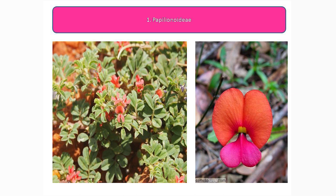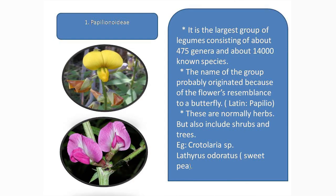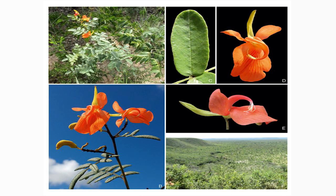Coming to the general habit of the plants belonging to Papilionidae: most of these plants are herbaceous. It is not rare to see shrubs as well as trees. Most of the timber-yielding plants are well-developed trees — for example, Pterocarpus marsupium.